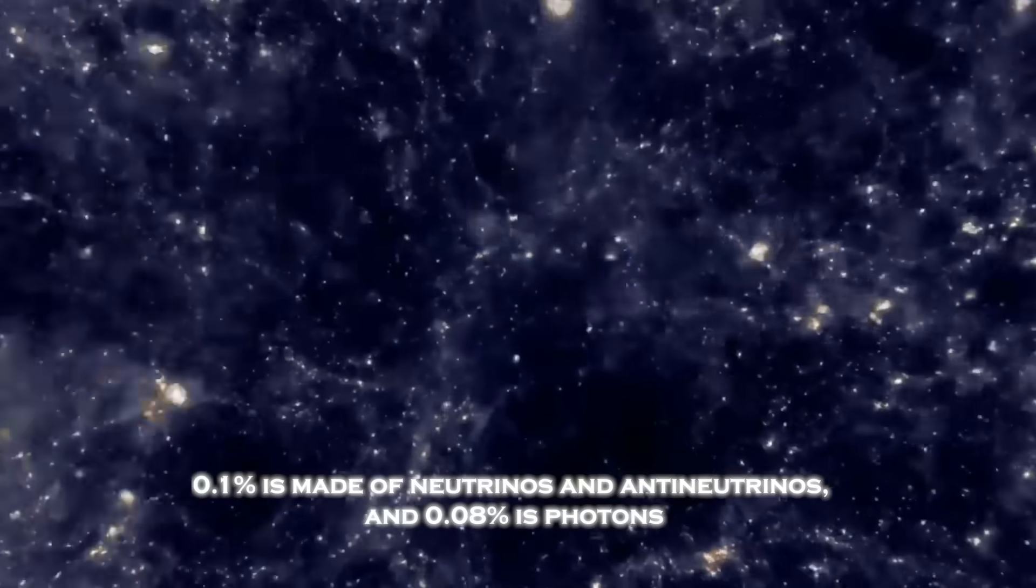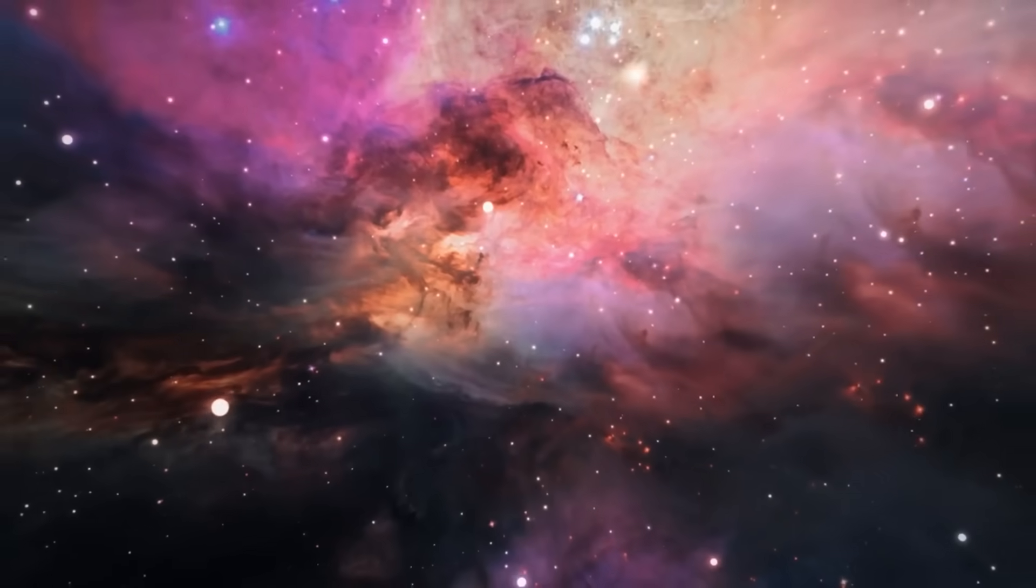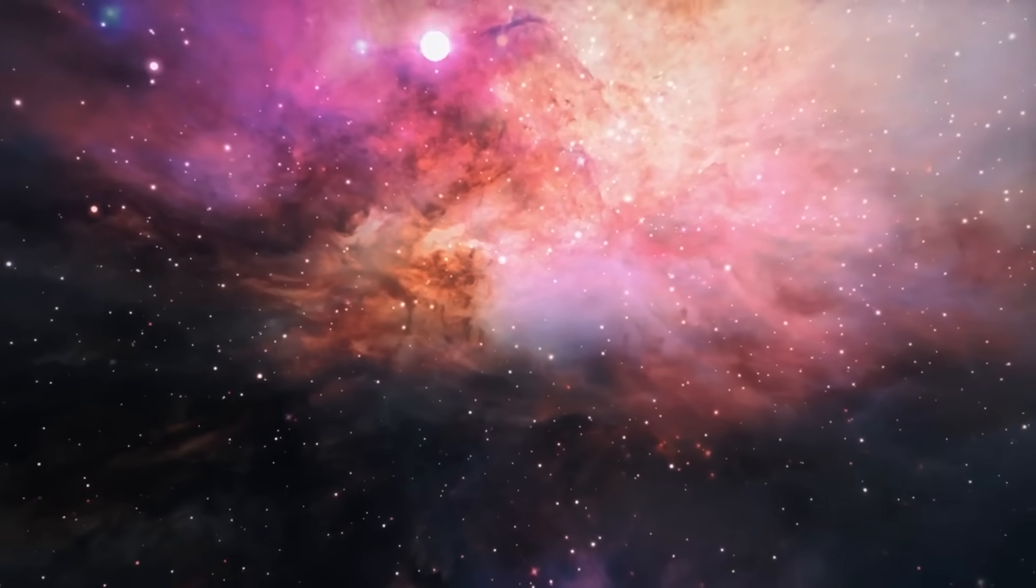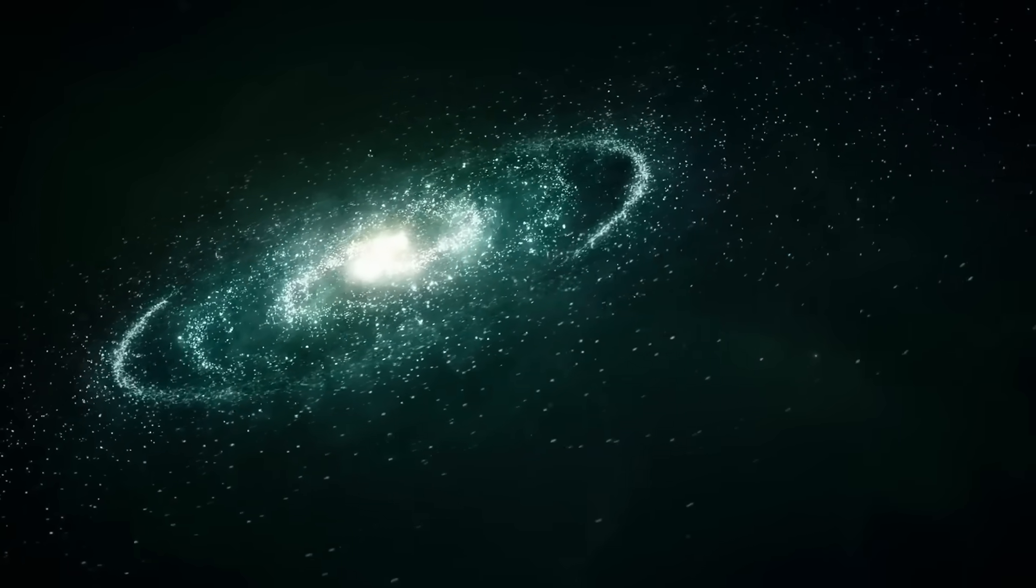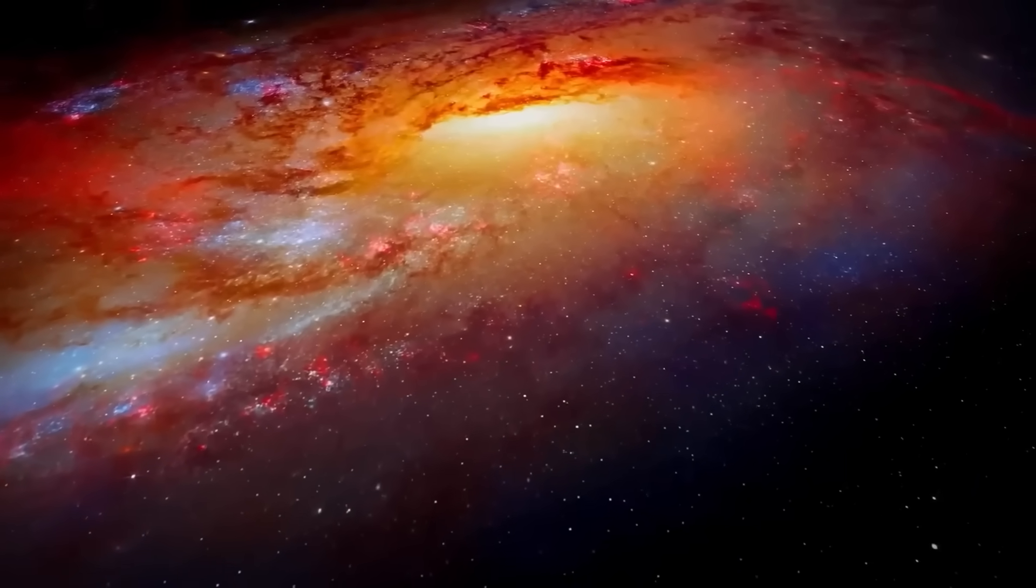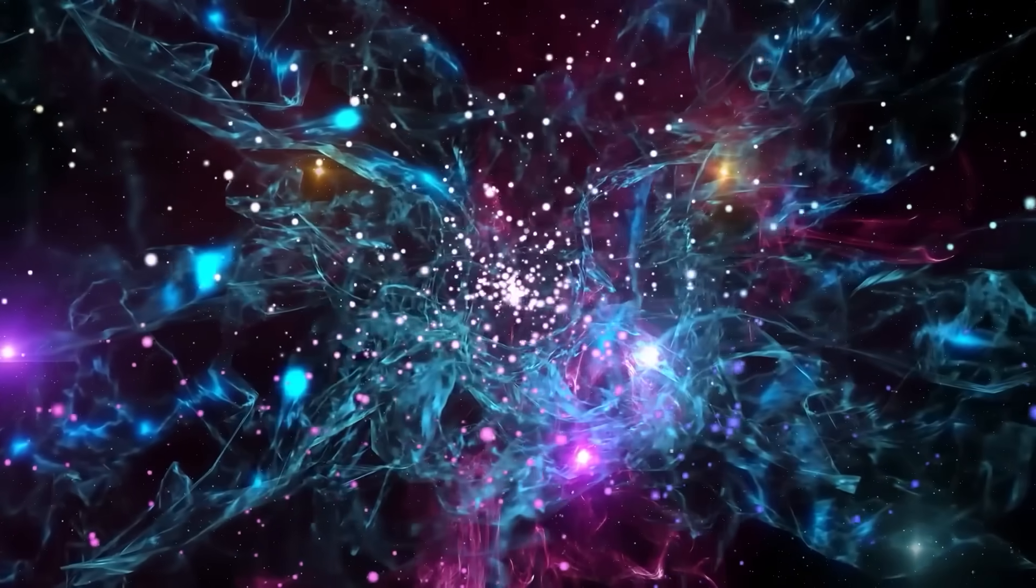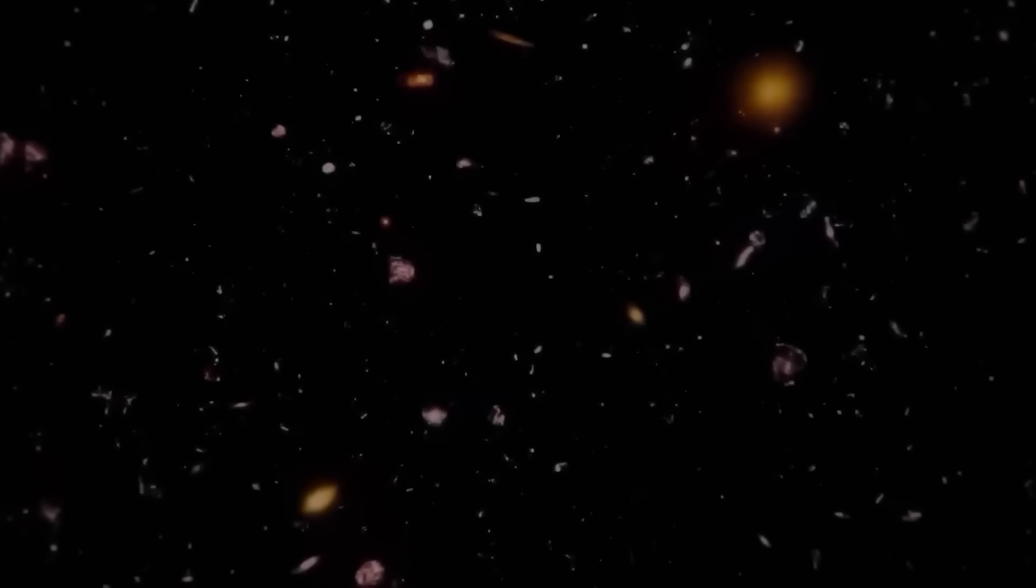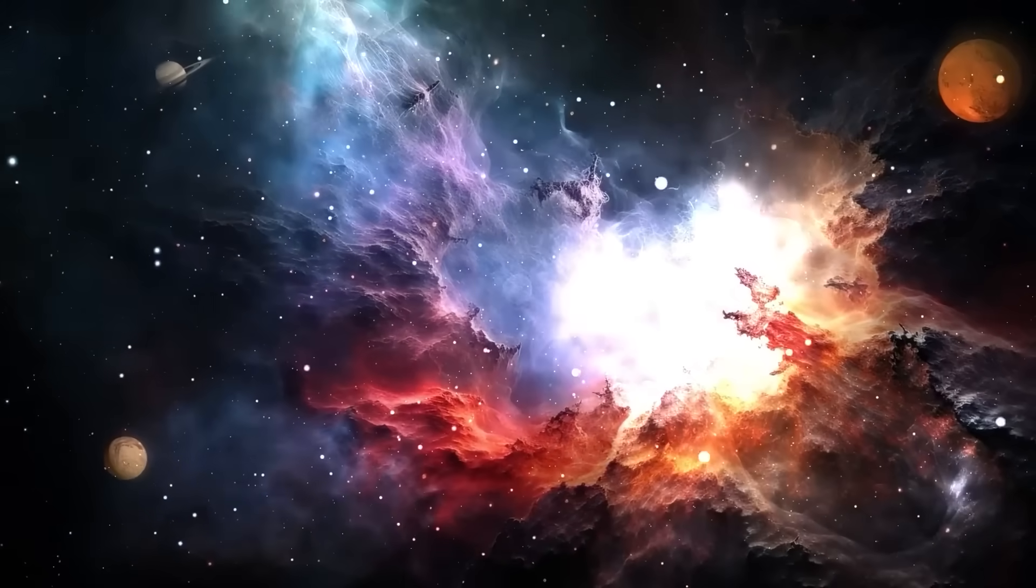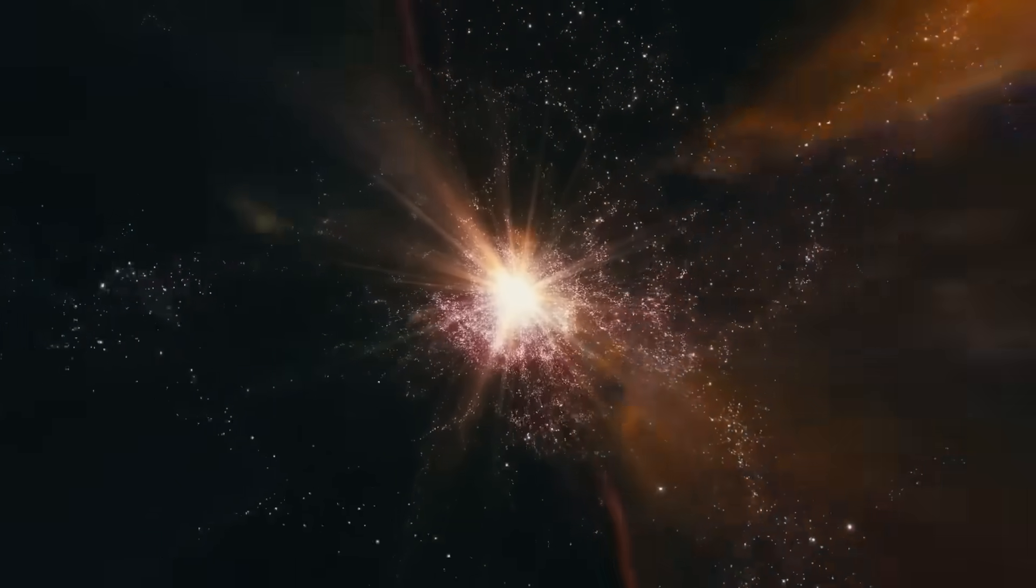Only 0.1% is made of neutrinos and antineutrinos, and 0.08% is photons. No other entities, such as cosmic strings or textures, are found. Knowing these components with such precision allows us to apply the laws of gravity, according to Einstein's theory of general relativity, to predict the future fate of the universe. In doing so, we discover that the universe is dominated by dark energy. This finding implies that galaxies that are not gravitationally bound to us will eventually move away at an ever-increasing rate. As the universe continues to expand unchecked, the distance between us and those galaxies will increase, making them appear to be moving away at an increasing speed. This leads to an even more disturbing conclusion.